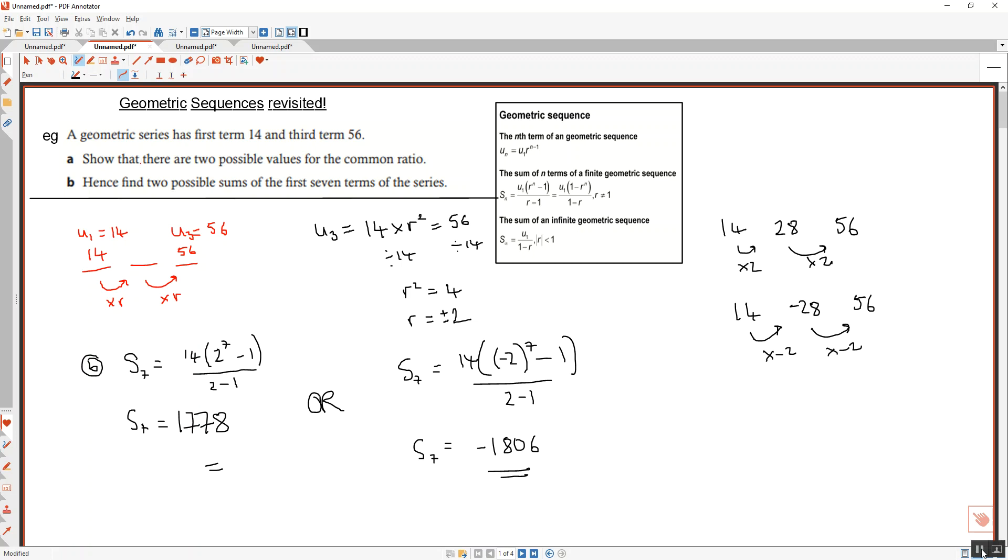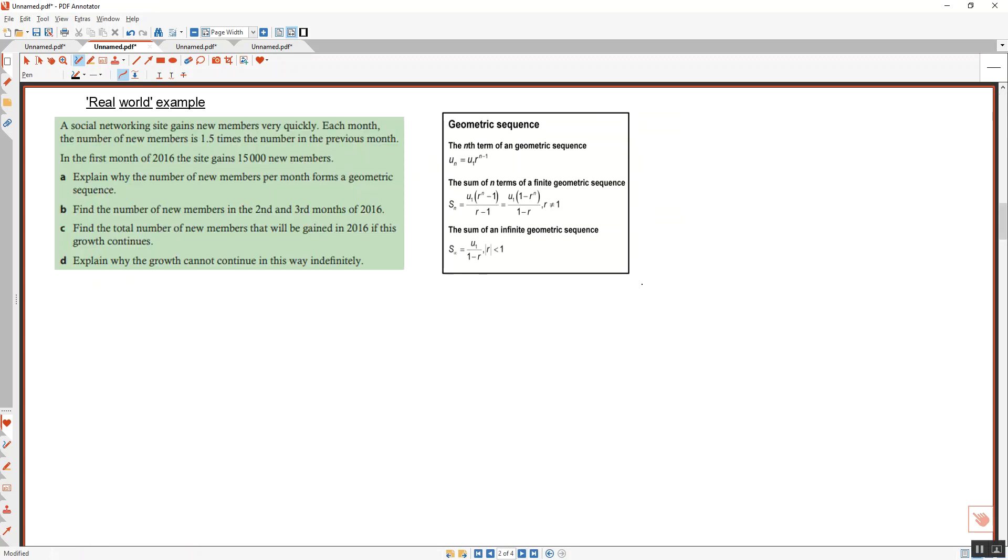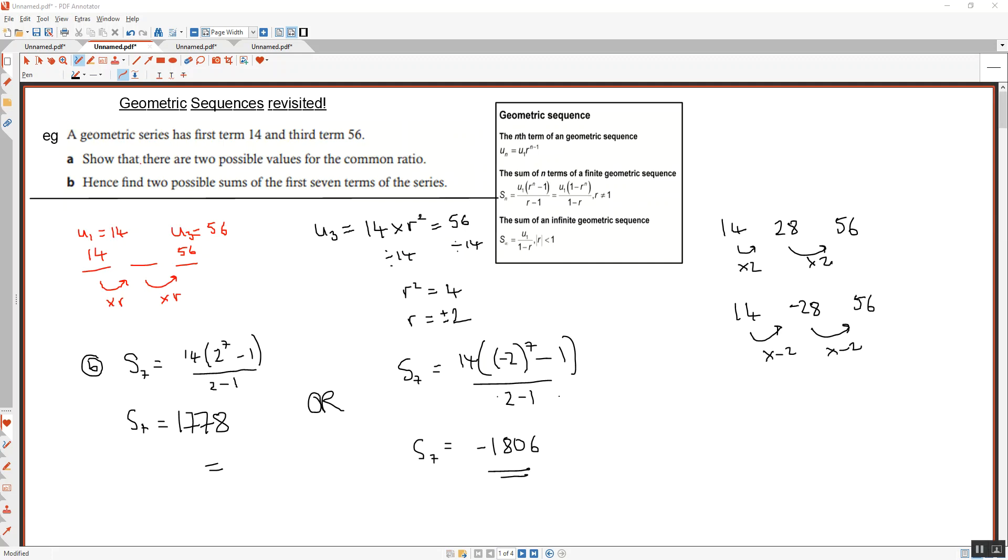S7, has anybody worked these values out? 1,778. Negative 1,806. Excellent. Easy enough. Okay, I'll put up the next question. This is a real world example. A social networking site gains new members very quickly. Each month the number of new members is one and a half times the number in the previous month. Explain why the number of new members per month forms a geometric sequence.